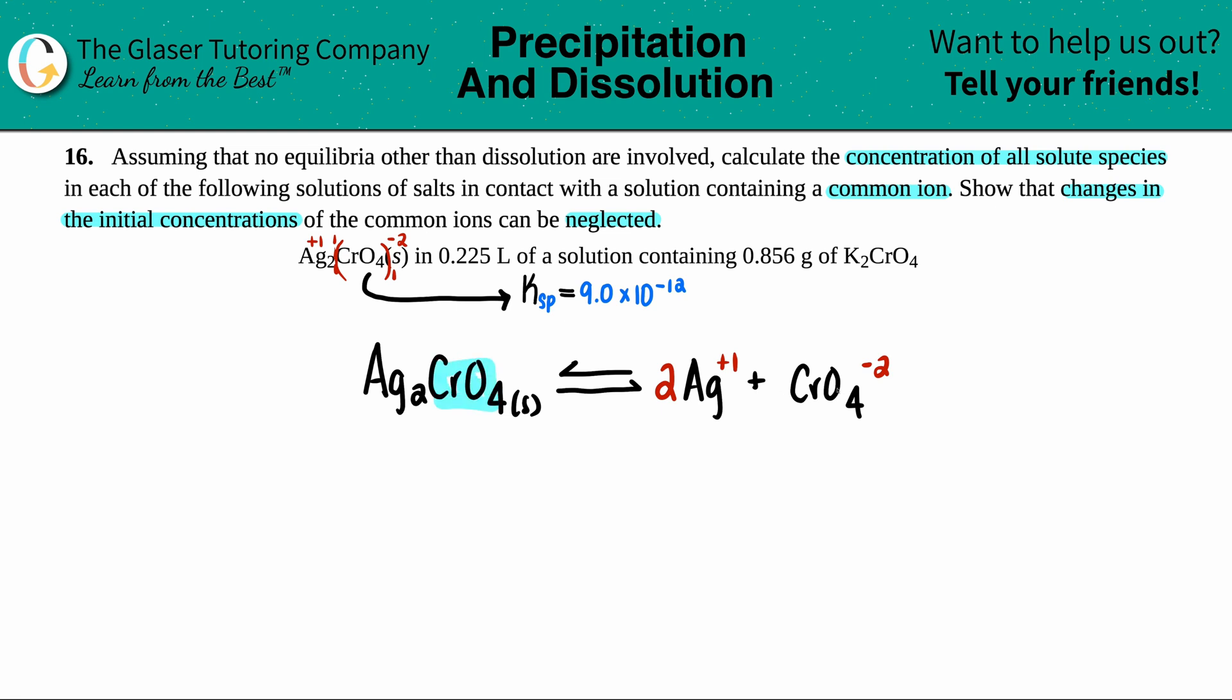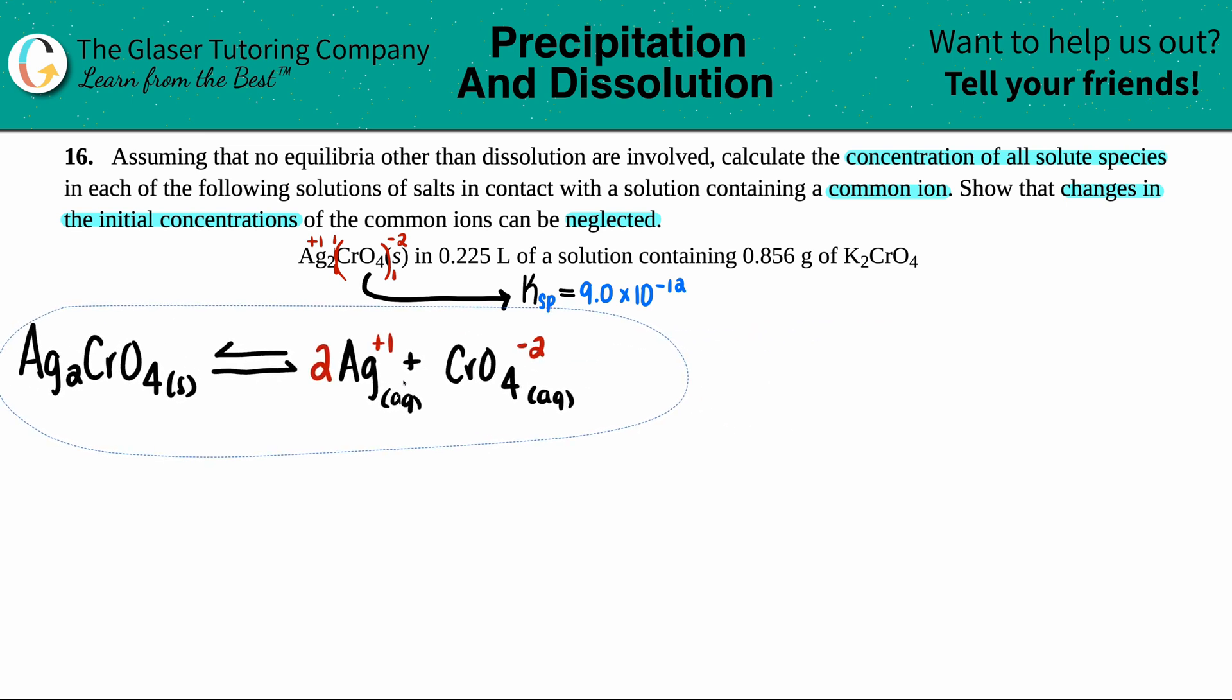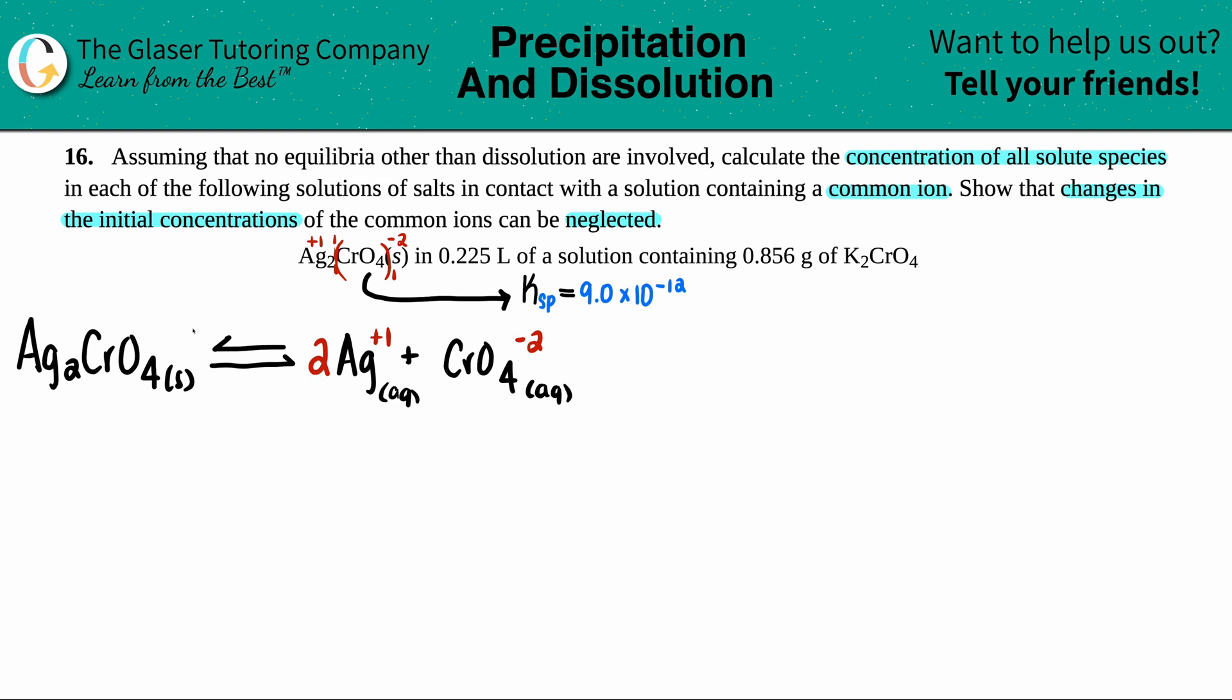There are two Ags so I put a two in front of the Ag, and one CrO4 so we're good. Anytime you have a charge they're aqueous, so these two are aqueous and the reactant is a solid. Now I'm going to use this to make my general Ksp formula. The Ksp formula is concentration of products raised to the coefficients.